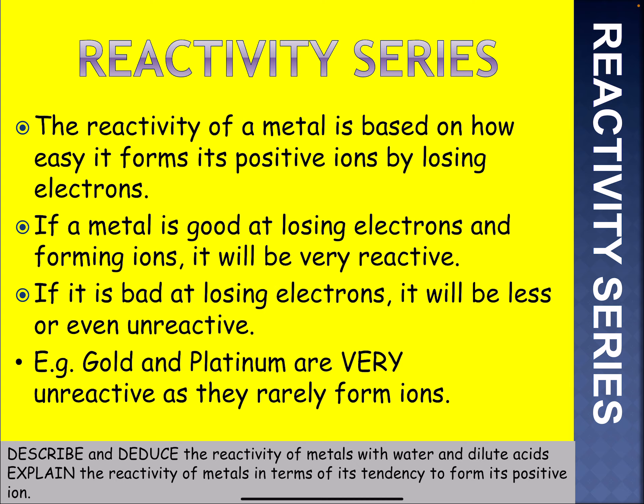The reactivity of a metal is based on how easily it forms positive ions by losing electrons. If a metal quite easily loses electrons, it is going to be very reactive. A metal that doesn't lose electrons as easily is going to be less reactive. Gold and platinum are very unreactive as they rarely form ions.